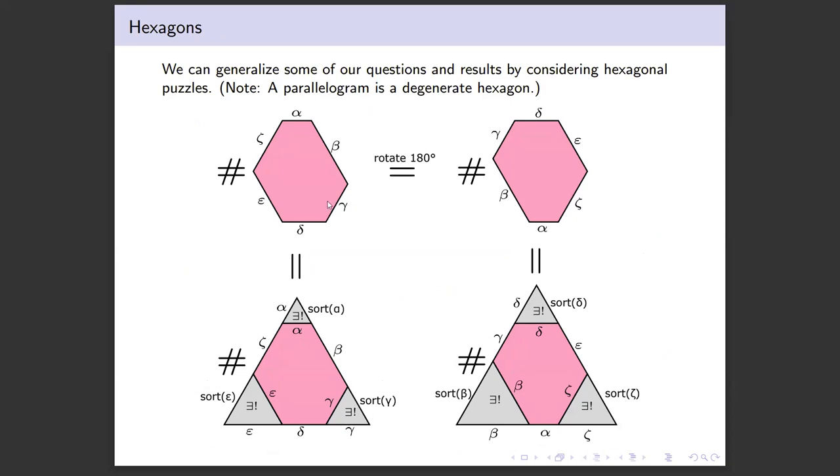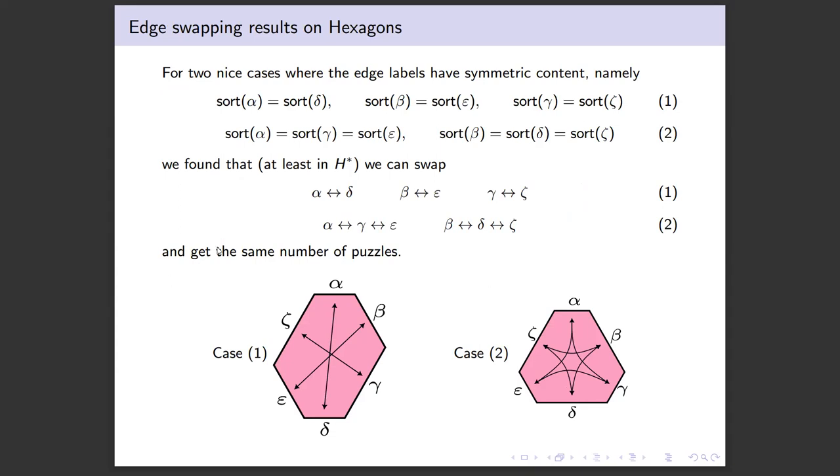Finally, hexagons. We can generalize some of this to questions about hexagons because a parallelogram is a degenerate hexagon. We can complete that to a triangle in a similar way, and we also ask about 180 degree rotation yielding a bijection. That was a weirder problem because this can be a bigger triangle, so a different Grassmannian and everything. I did prove that for ordinary cohomology at least. We also find similar edge swapping results for hexagons with symmetric edge content. There's two nice cases: where opposite edges have the same number of ones and zeros, and where you have three-way symmetry. For each, you can swap between those symmetric edges and end up with the same number of puzzles.